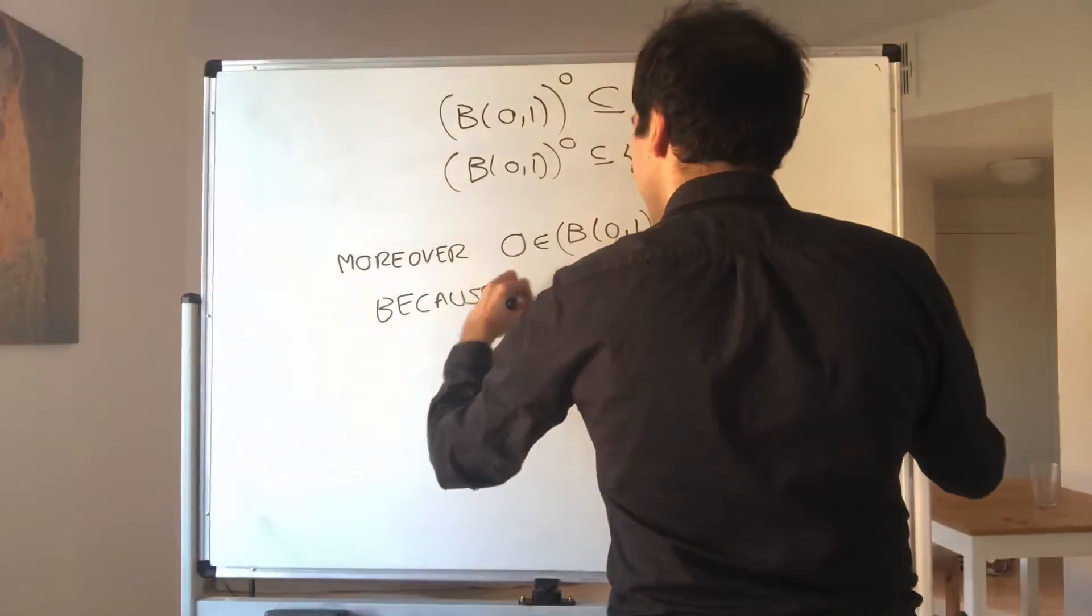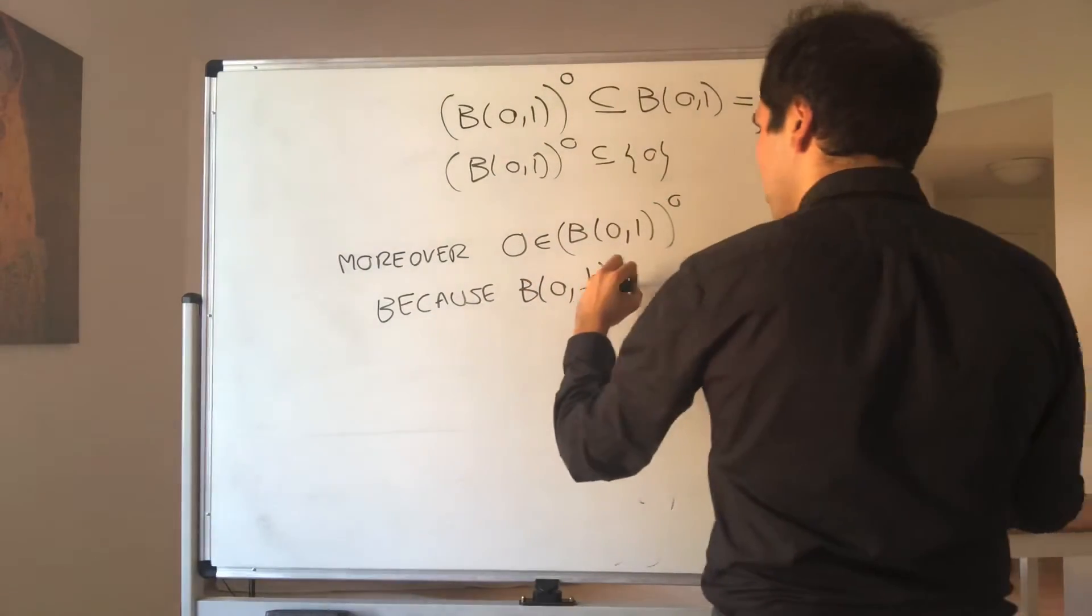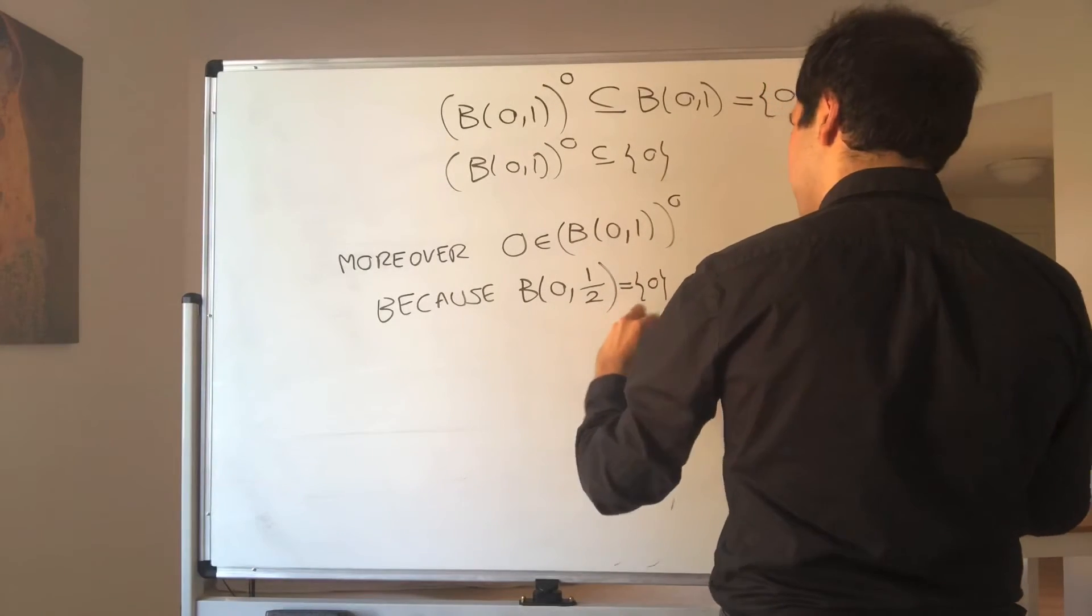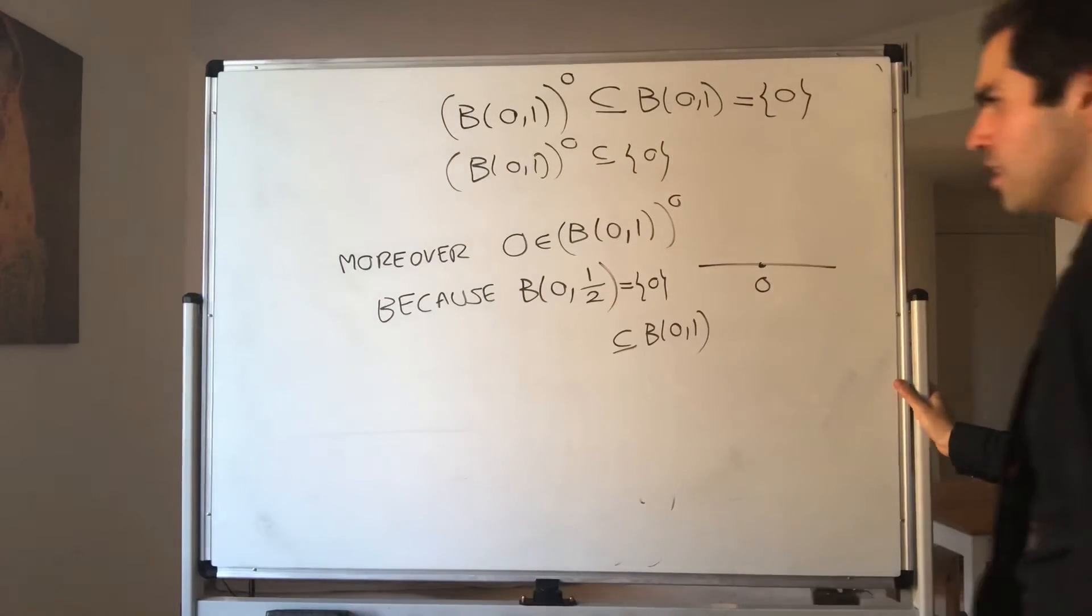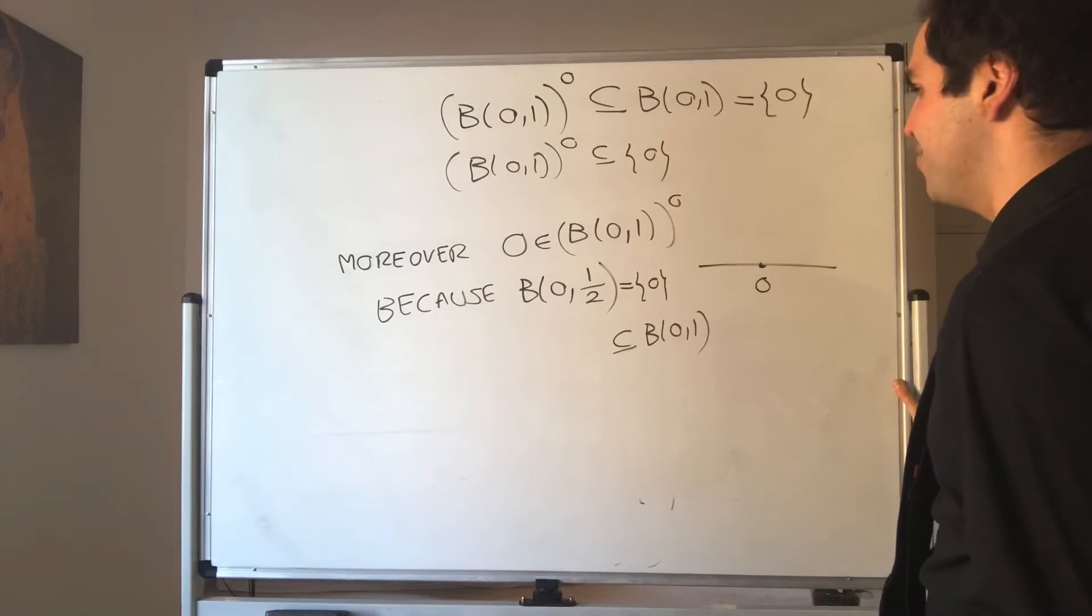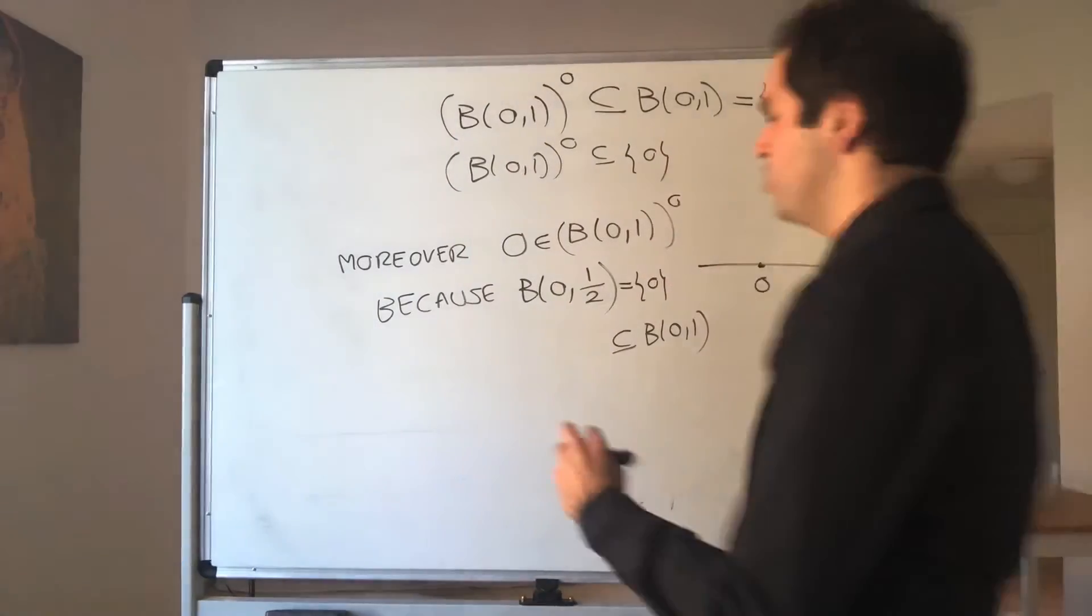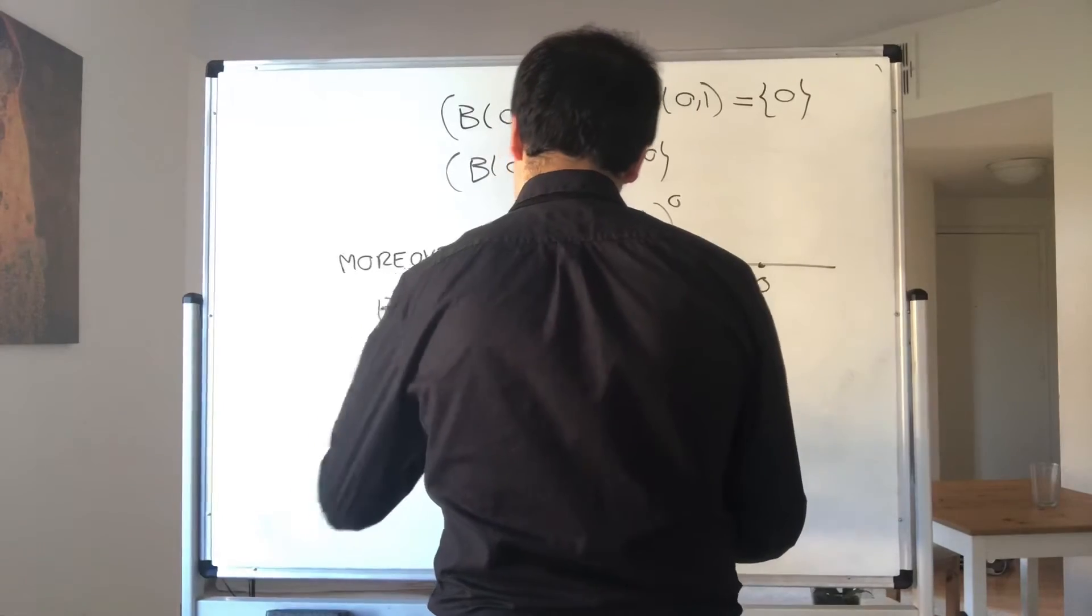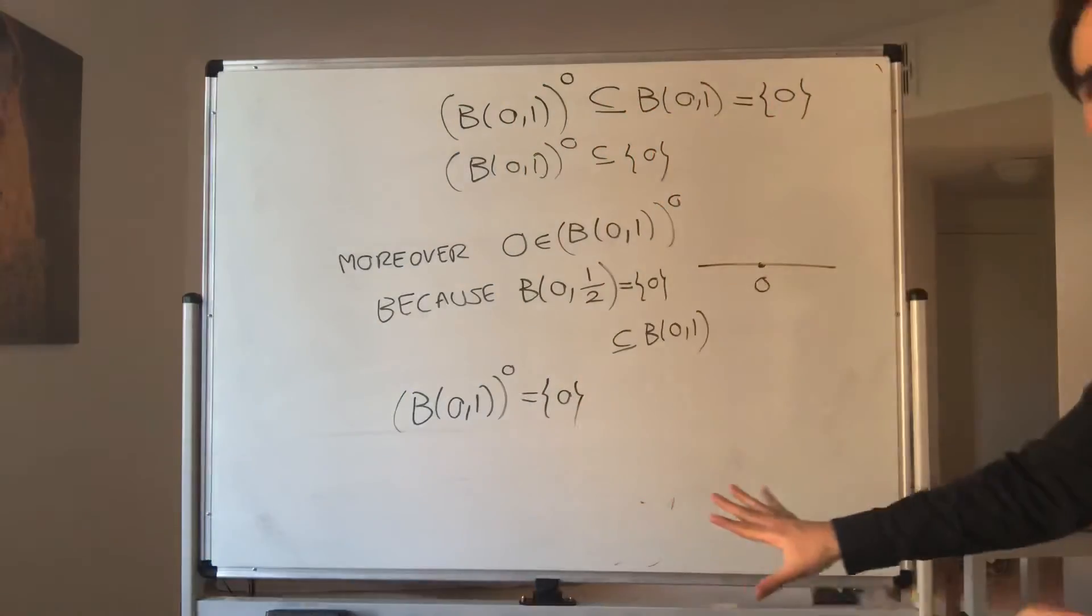Which is also zero, and that's included in your set. And therefore, what's called, the interior is just zero. Okay, and now we can find the boundary. So what was the boundary? So the boundary of B(0,1), that's the difference between the closure and the interior.